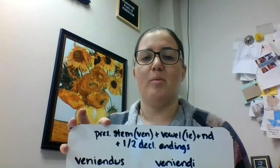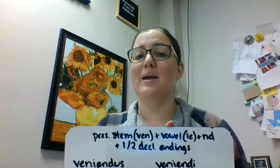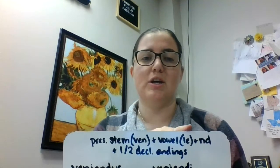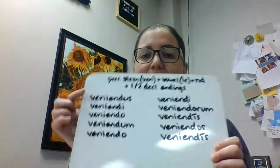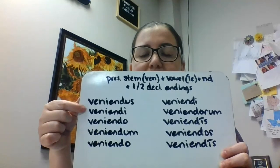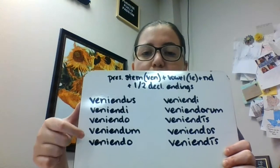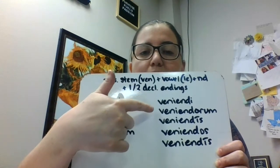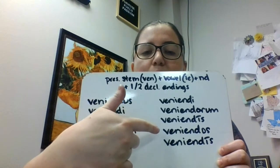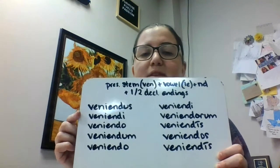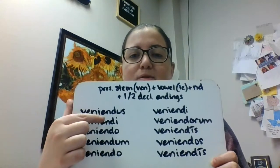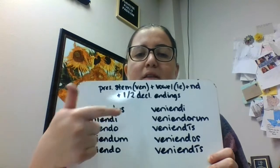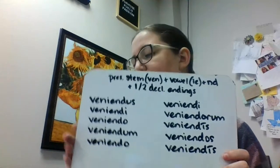Our next one was our future passive participle. Our formula for this one is our present stem — we're using venio here, so that's 'ven' — and then our vowel, again the imperfect middle vowels. Since it's fourth conjugation, that's an 'ie'. And then the 'nd', and then our first and second declension endings. We're doing this in the masculine, so we should have: veniendus, veniendee, veniendoe, veniendum, veniendoe, veniendee, veniendorum, veniendees, veniendos, veniendees. Remember, we're using the 'nd' to tell us it's future passive — this is our 'butter pecan deus' participle. We're using that imperfect middle vowel, so we need the 'ie'. Then our first and second declension endings — here second declension since it's masculine.